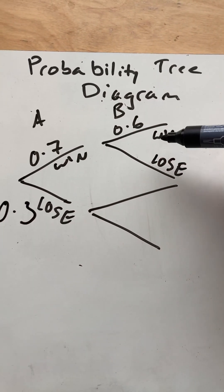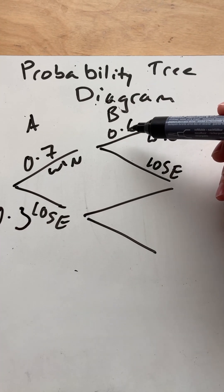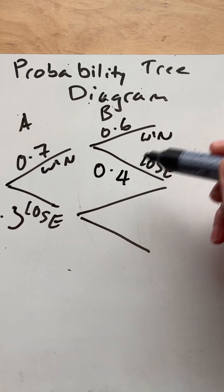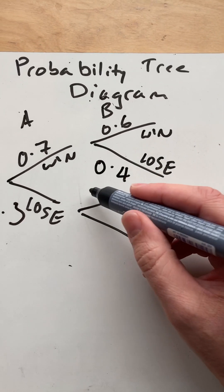In the other event, if it's independent, and its probability of winning is 0.6, then that must also be 0.4, because it's 1 minus that. We'll repeat that here.